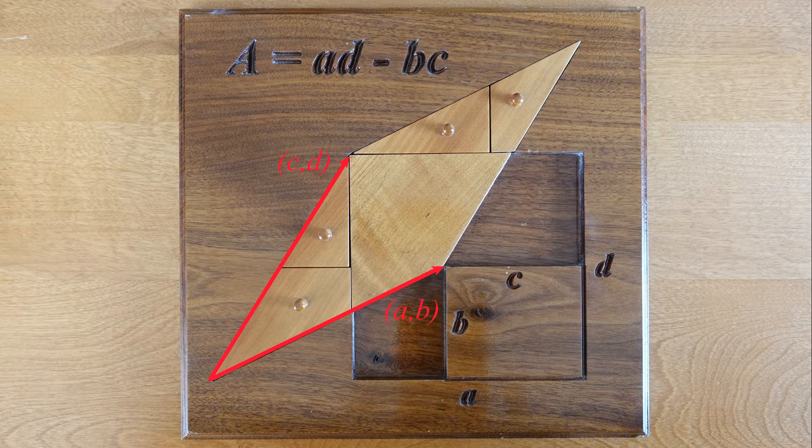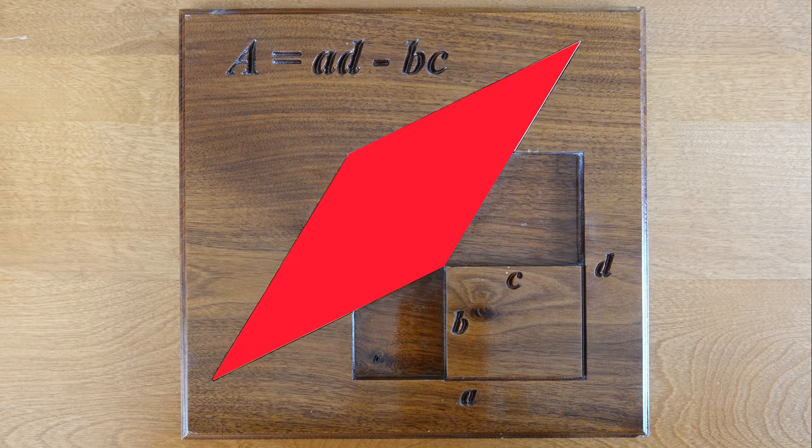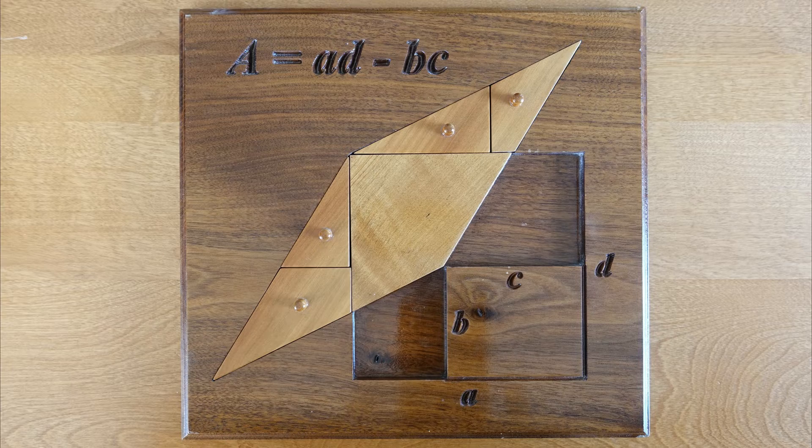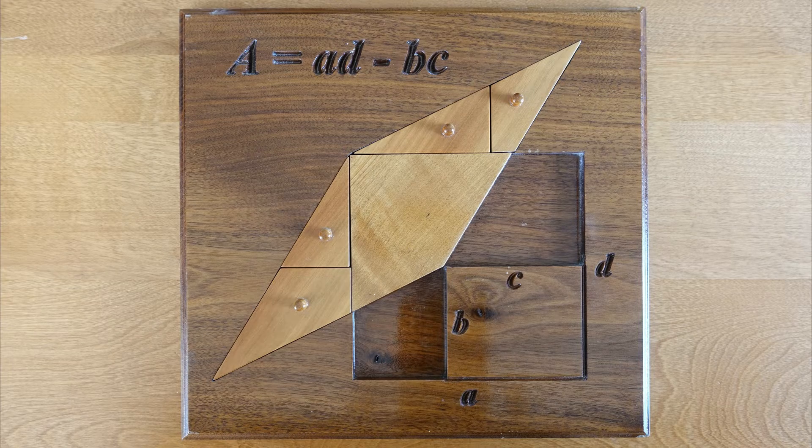Given two vectors, the magnitude of the determinant gives the area of the parallelogram spanned by the two vectors. Now here's how the puzzle is solved.